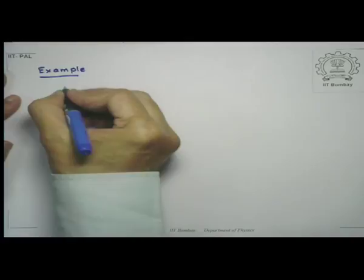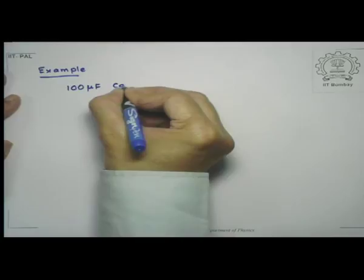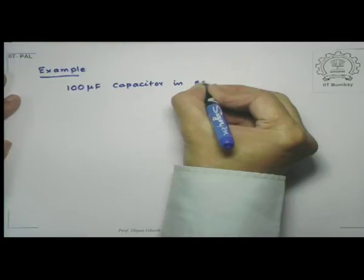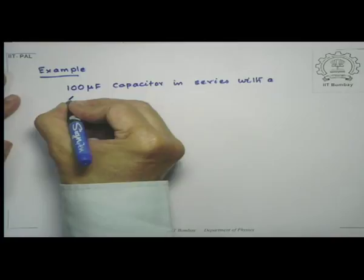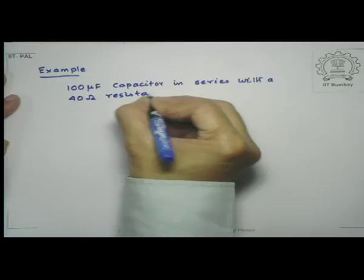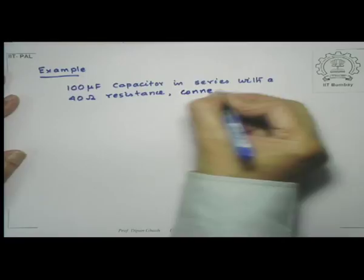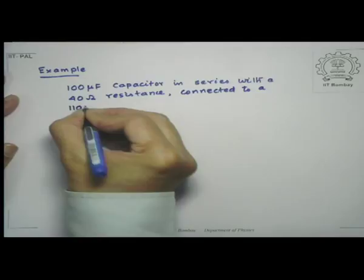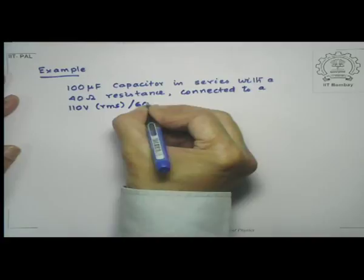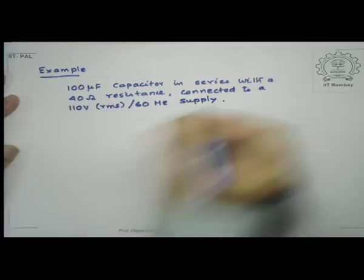Let me give a few more examples over what I did last time. I have a 100 microfarad capacitor in series with a 40 ohm resistance, which are connected to a 110 volt RMS, 60 hertz source. The question is: what is the time lag between the current maximum and the voltage maximum?